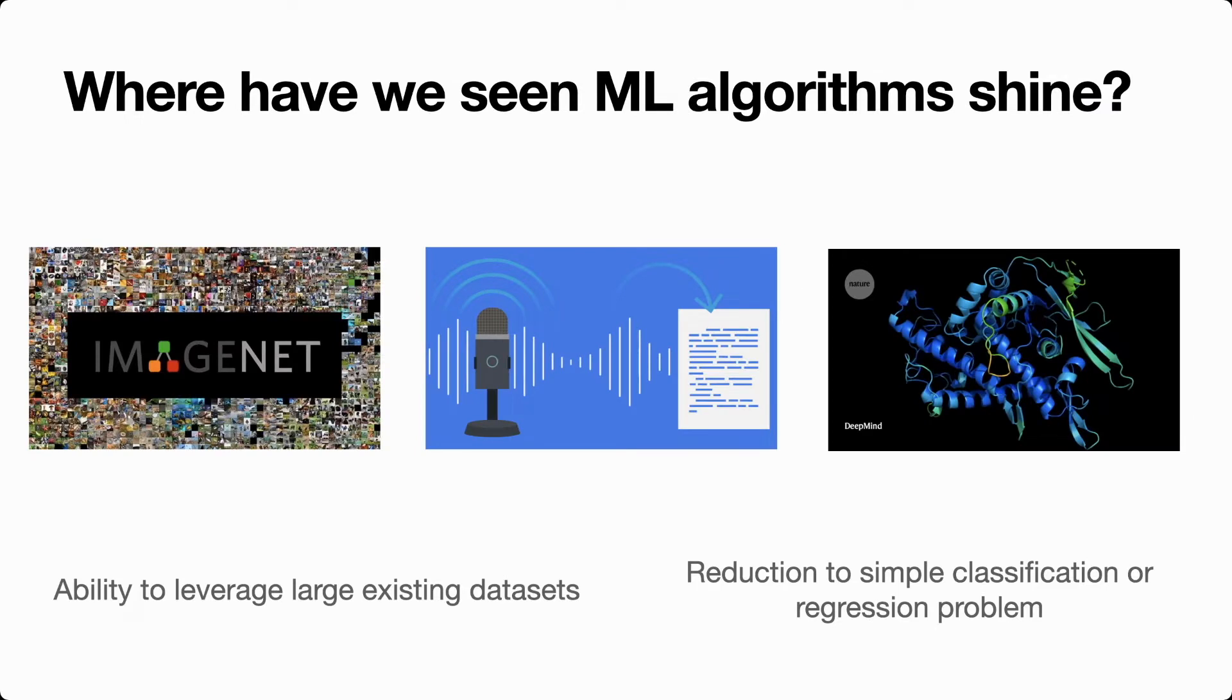A lot of our successes in machine learning have centered around this workhorse of supervised learning. With enough data and the right inductive biases, supervised learning with a neural network works really well. So if we can reduce our problem into a prediction problem, whether classification or regression, then we can start to leverage the success we've had with neural networks.